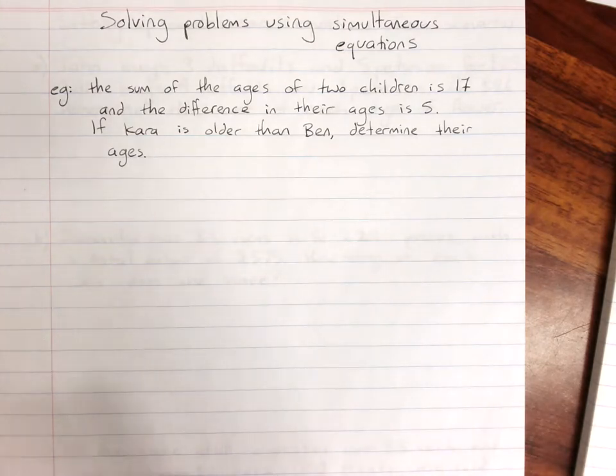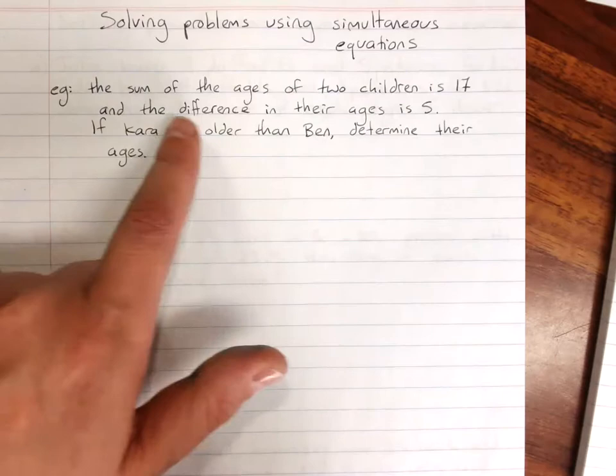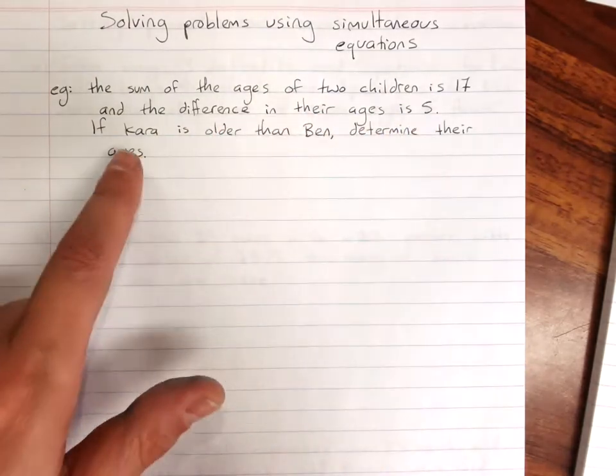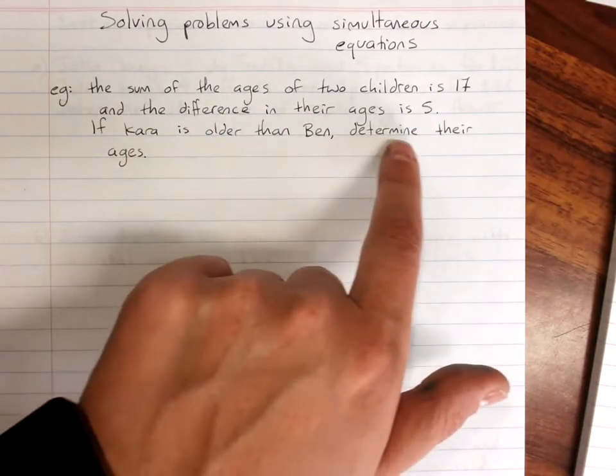So here's my problem. The sum of the ages of two children is 17 and the difference in their ages is 5. If Kara is older than Ben, determine their ages.